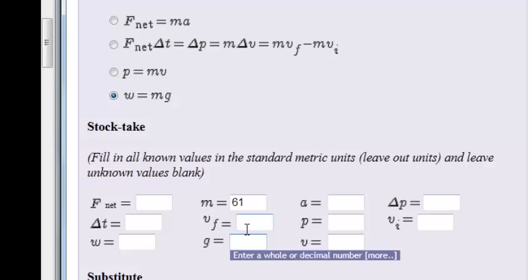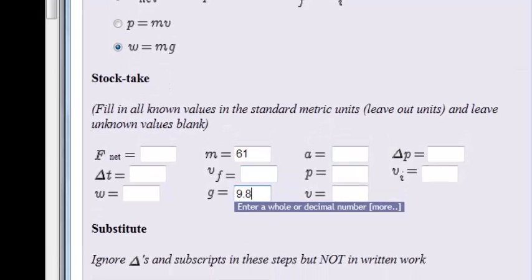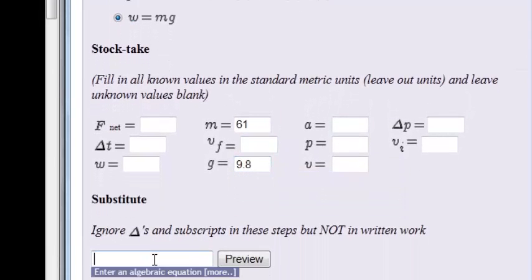The gravitational constant we have as 9.8. And we can simply substitute: weight is equal to mass, which is 61, times the gravitational constant, which is 9.8.